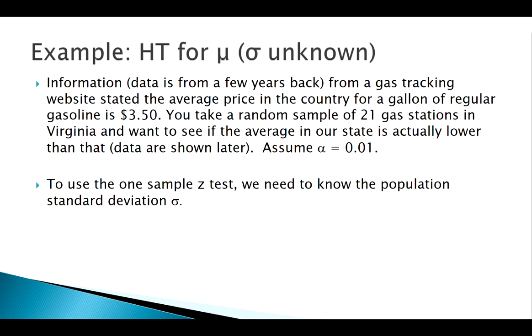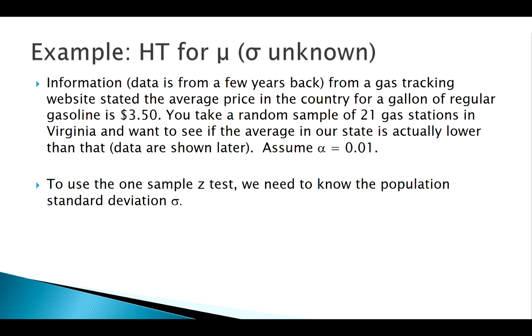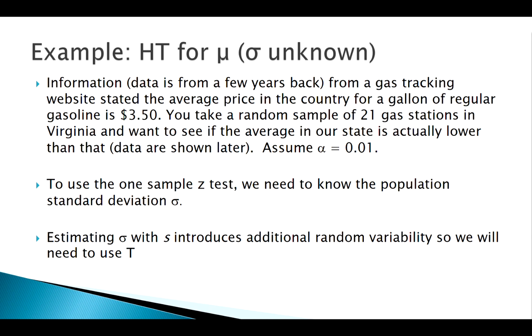Now also notice, every once in a while we'll use an alpha that's not 0.05. Here we're going to use a different alpha, 0.01. We know that mu is our parameter of interest, but we don't see anything in our problem about sigma. So we're thinking, alright, we don't know sigma, so we're going to want to use t.